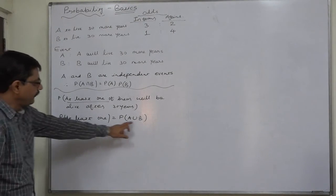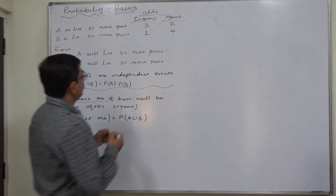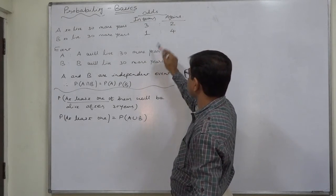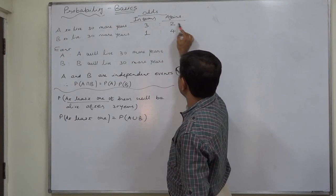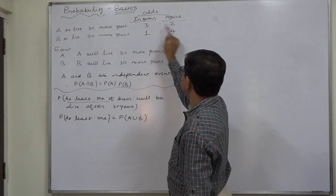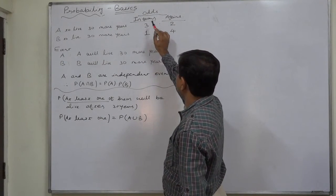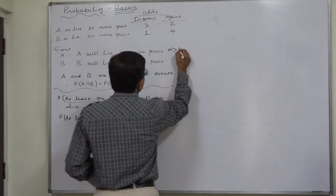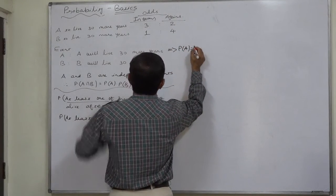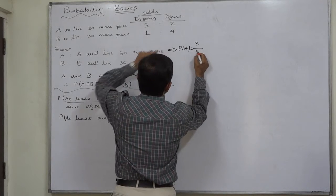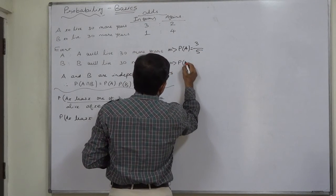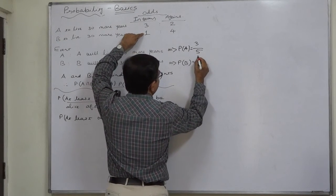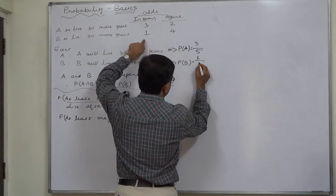To calculate the probability of the union of two events, we need P(A) and P(B). What is A? A will live 30 more years — the odds in favor are 3 to 2, so total chances are 3 + 2 = 5. Therefore P(A) = 3/5. Similarly, P(B): B will live 30 more years — the odds in favor are 1 to 4, so P(B) = 1/(1+4) = 1/5.